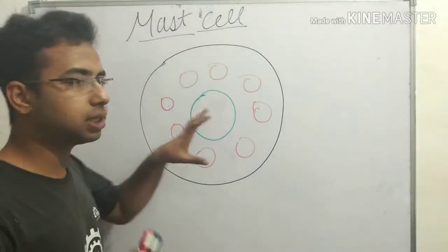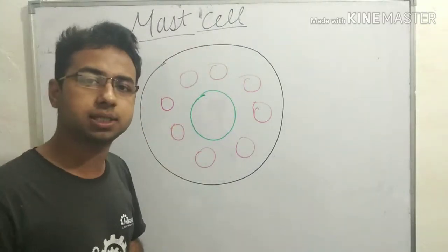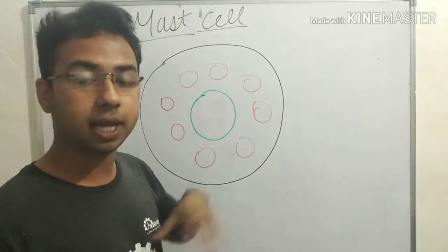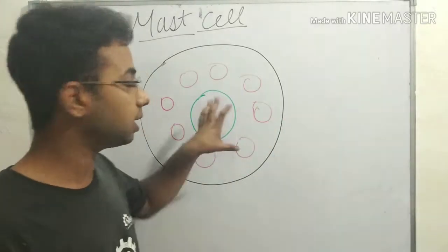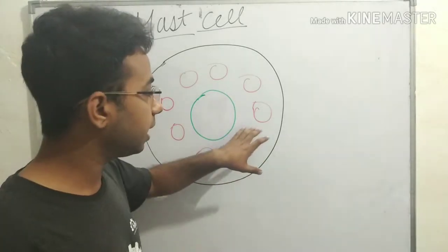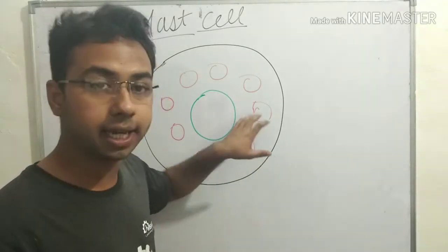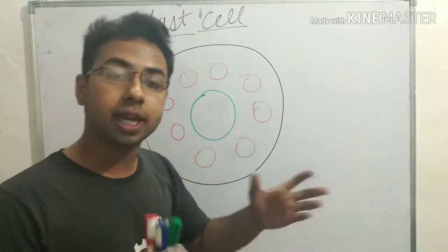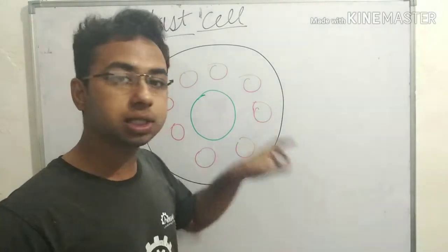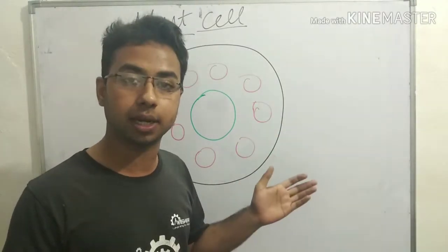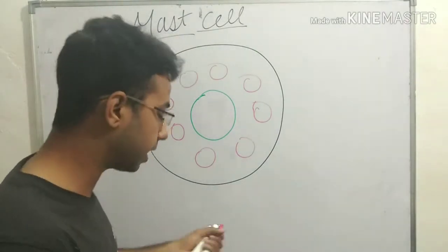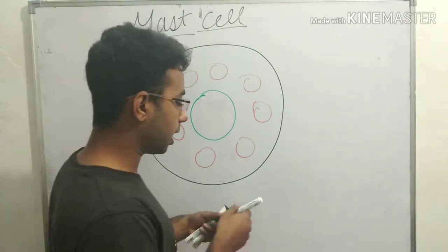Now let's talk about the structure of mast cells. Mast cells are a type of immune cell and they contain granules. The granules contain heparin and histamine.